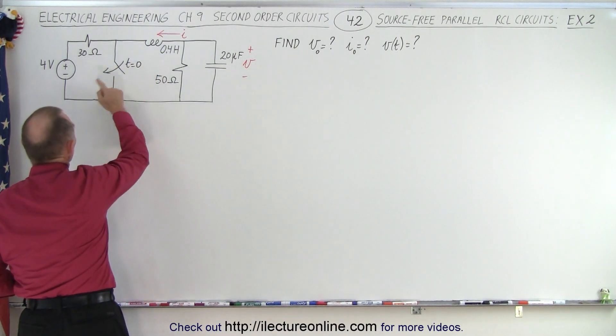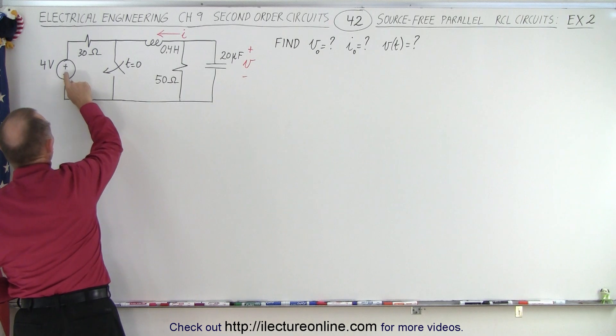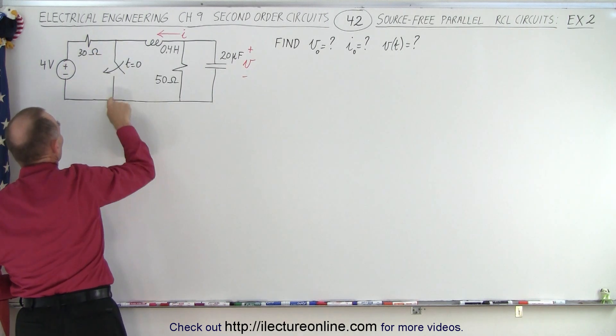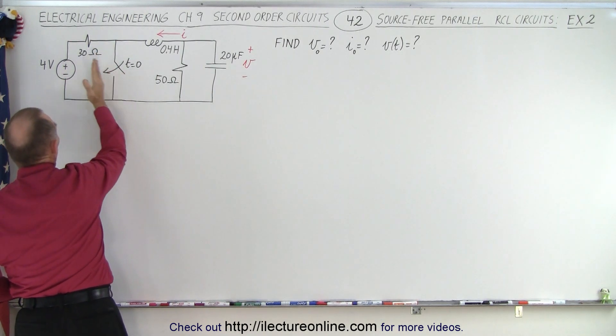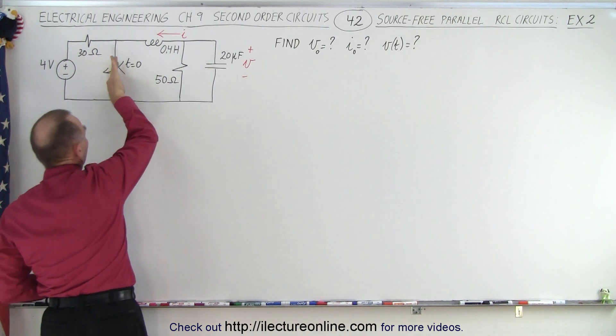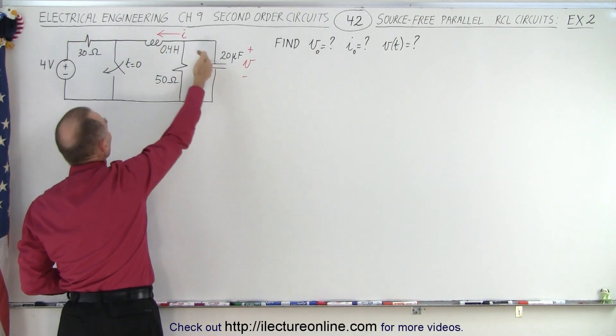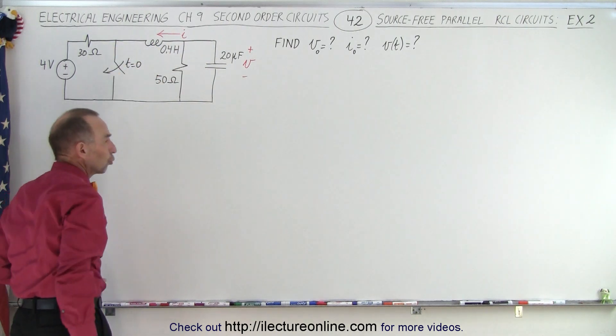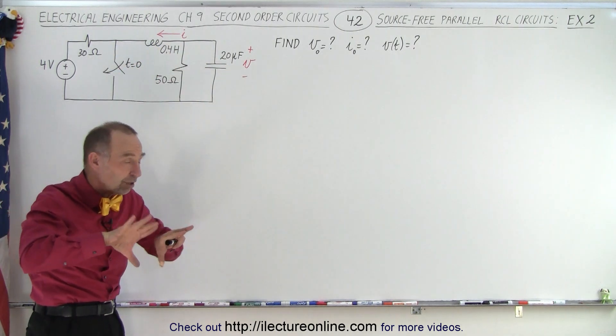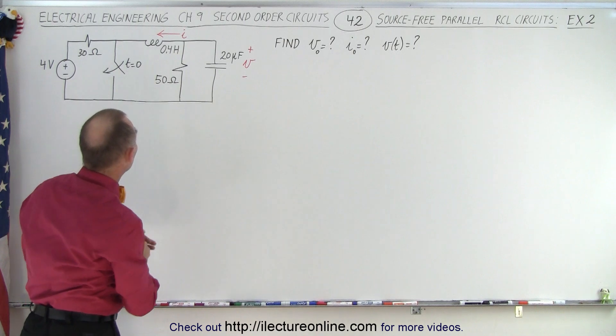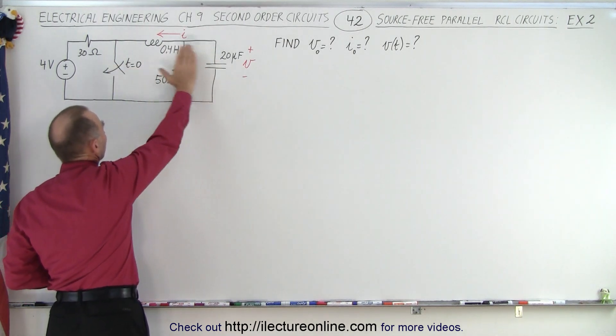Notice, once the switch closes, the source will push current through the 30 ohm resistor, but then through the short and back to the source. So the left side of the circuit will be separated from the right side of the circuit and will also act independently because the current will be pushed through that short as well. So essentially, it's like you have two separate circuits and we can simply deal with this portion of the circuit.